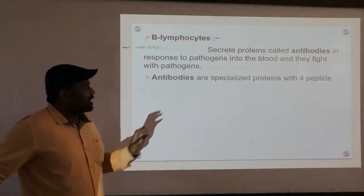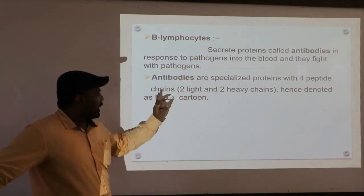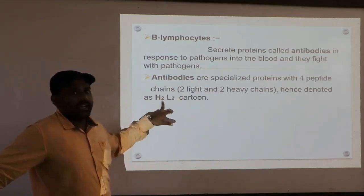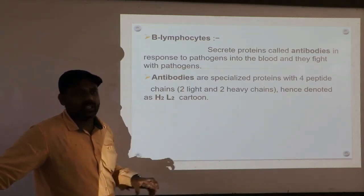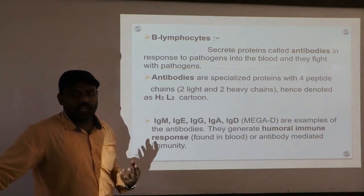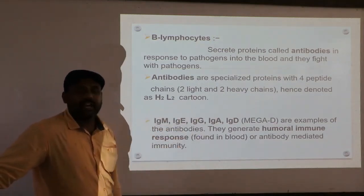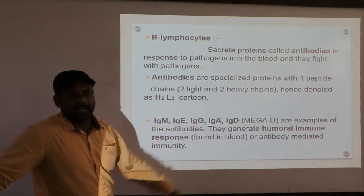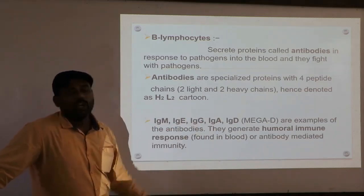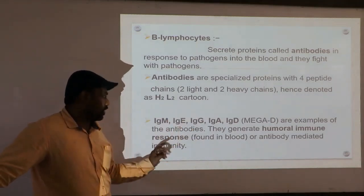Antibodies are specialized proteins made of four polypeptide chains — long chains of amino acids. Out of the four polypeptide chains, two are called heavy chains and two are called light chains, hence denoted as H2L2. The types of antibodies present in the body can be remembered using the mnemonic 'MEGA D': IgM, IgE, IgG, IgA, and IgD — representing mu, epsilon, gamma, alpha, and delta immunoglobulins. These are found in the blood and generate humoral immune response.